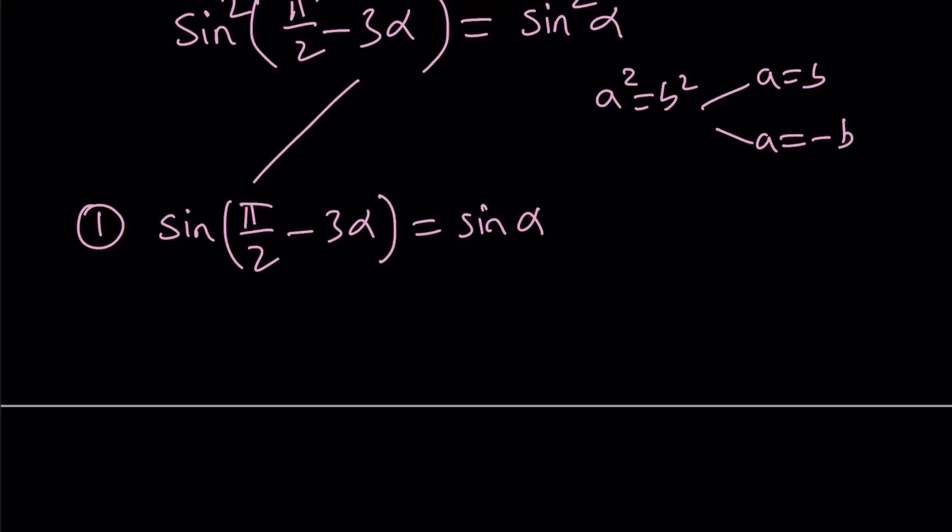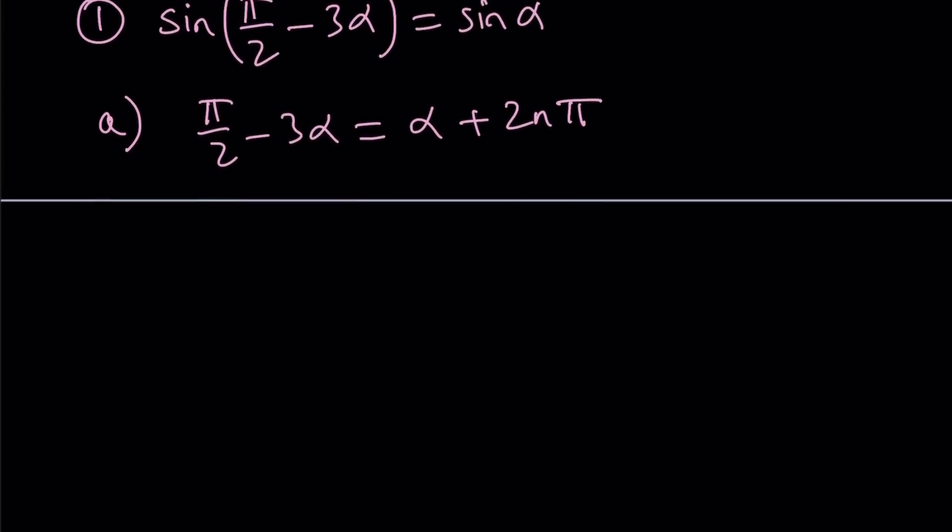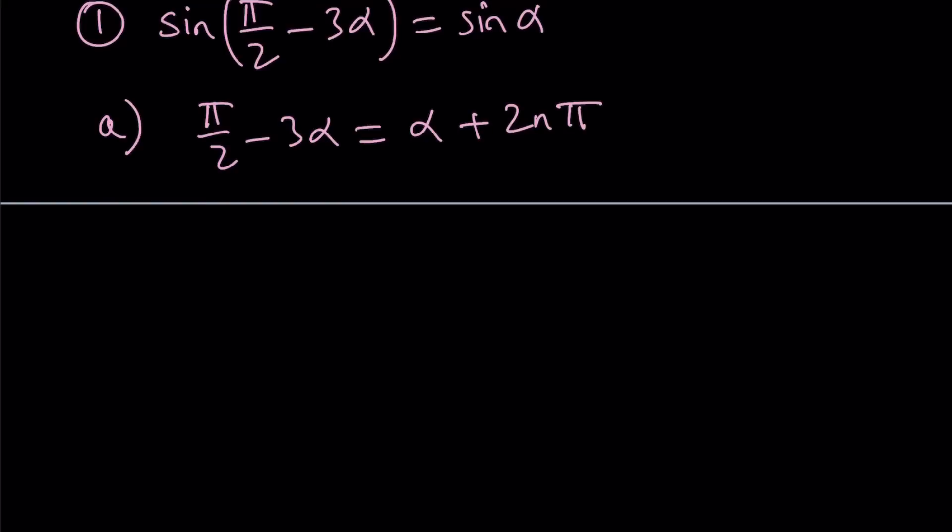And this splits up into two solutions. Like I said earlier, 1a is going to be, just take it as is, pi over 2 minus 3 alpha equals alpha plus 2n pi. You just add multiples of 2 pi to it. And then from here, we can basically put everything on the same side. Let's subtract alpha,